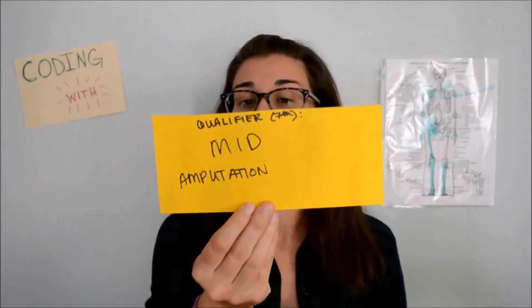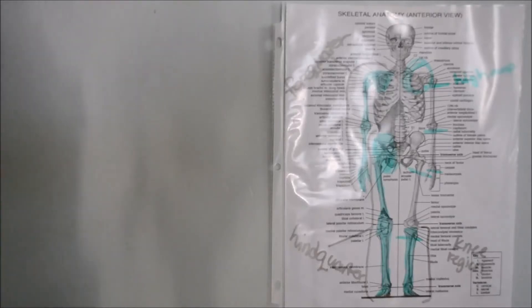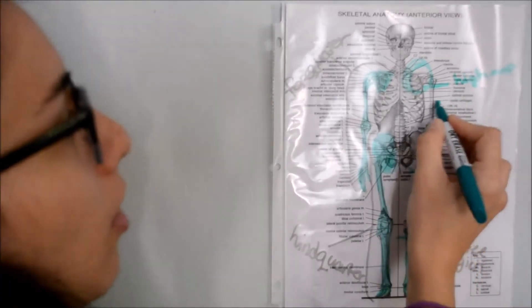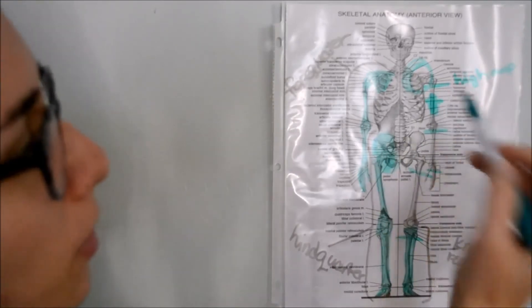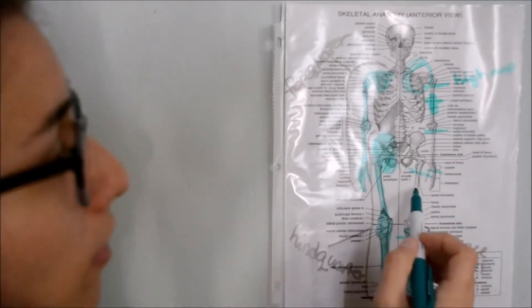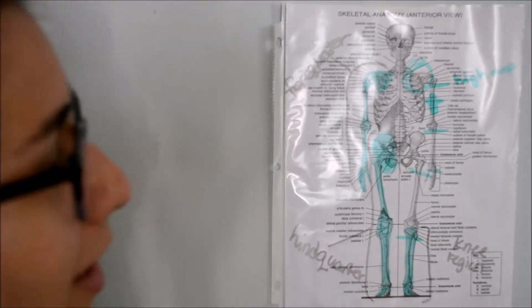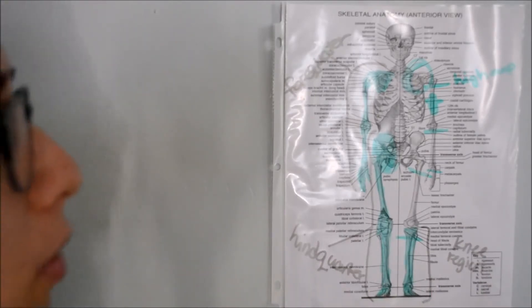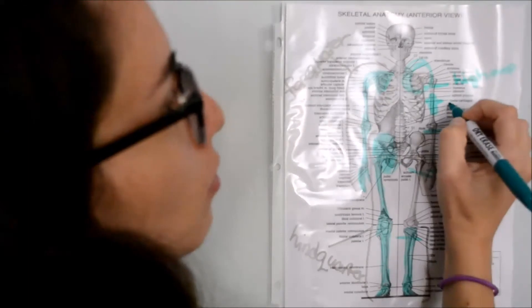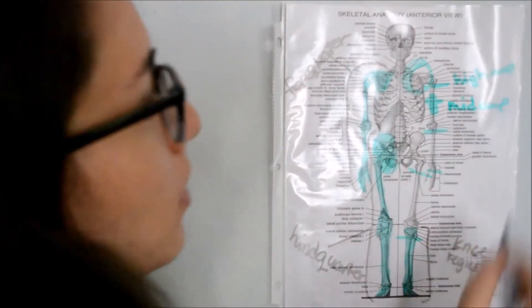The next term that you will see in your qualifier or seventh character placement is a mid amputation. We are basically talking about anywhere along the shaft of the humerus, ulna and radius, femur, tibia and fibula, and also along the middle portion of the shaft of the hand or foot bones. This would be your mid amputation.